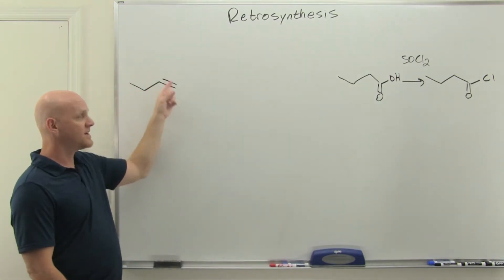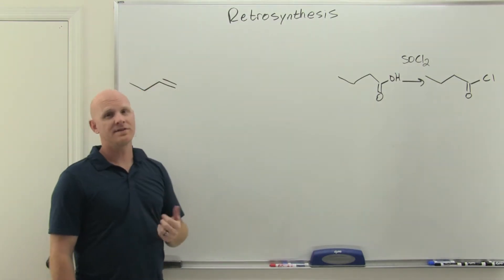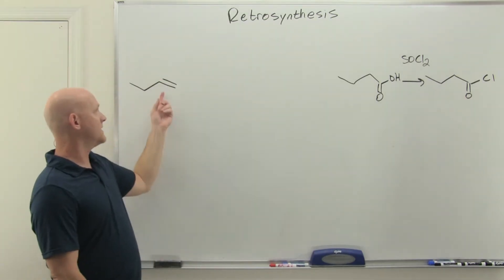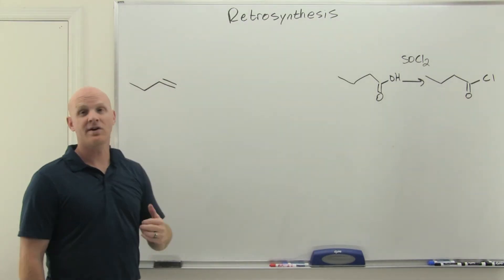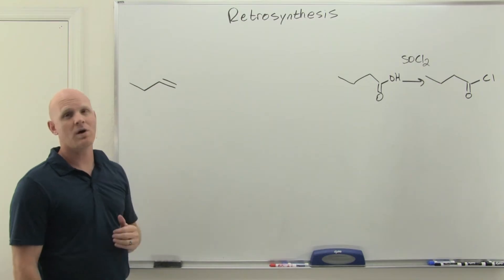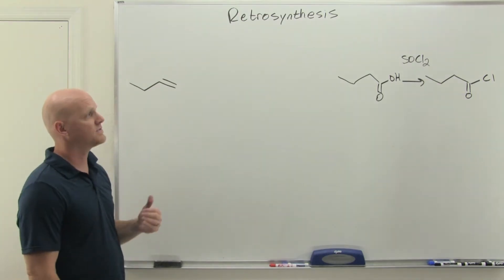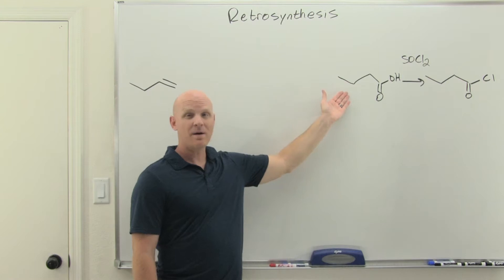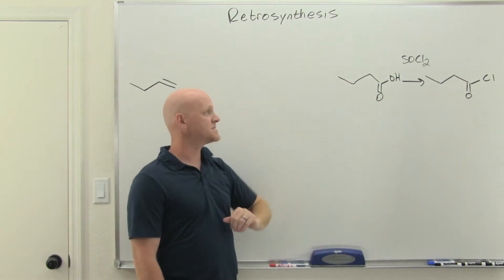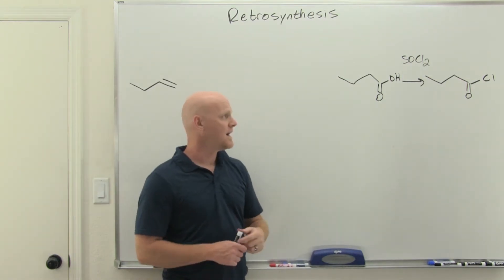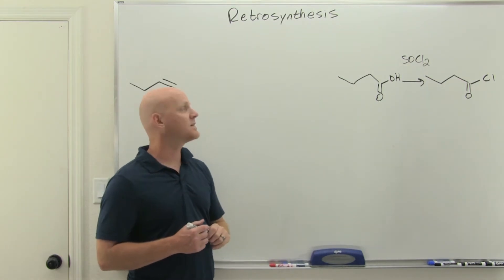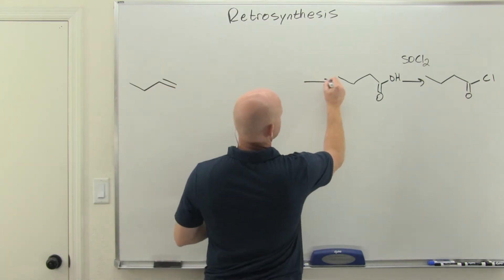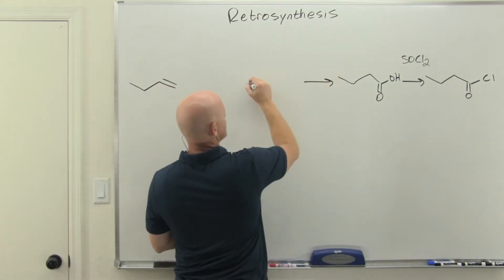We're not adding or taking away any carbons. I could do ozonolysis on the alkene and make a carboxylic acid, but it would have one fewer carbon than what we've got, so we don't want to do that. Ozonolysis is probably not the best choice here since we don't want to lose any carbons. We also learned how to oxidize alcohols, which is going to look very promising.